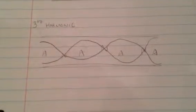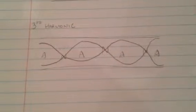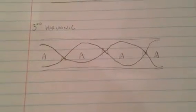This is the third harmonic. There are three nodes and four antinodes. And there is three halves of a wave inside of the column.